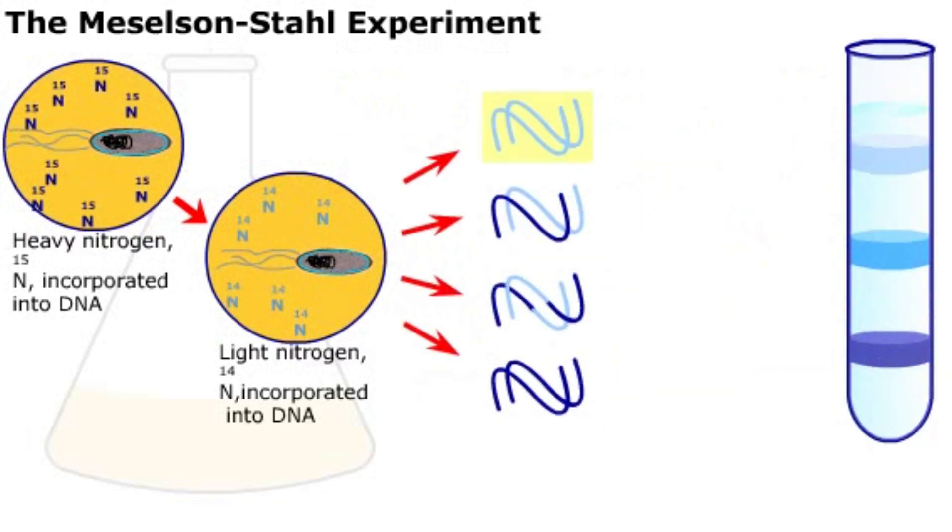DNA made with only the lighter nitrogen isotope stayed near the top of the liquid, while DNA with only the heavier nitrogen isotope went to the bottom. DNA molecules containing some of each type of nitrogen ended up in the middle.